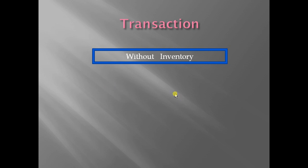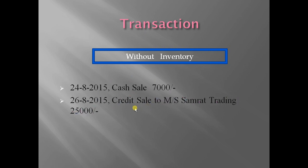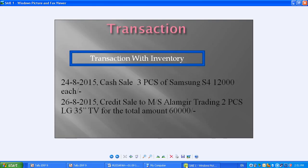The second set of examples will be for transactions without inventory. Here, no inventory means no item will be mentioned — just the sale price. The two transactions are: 24/8/2015 cash sale 7,000, and 26/8/2015 credit sale to M/s Shambath Trading 25,000.